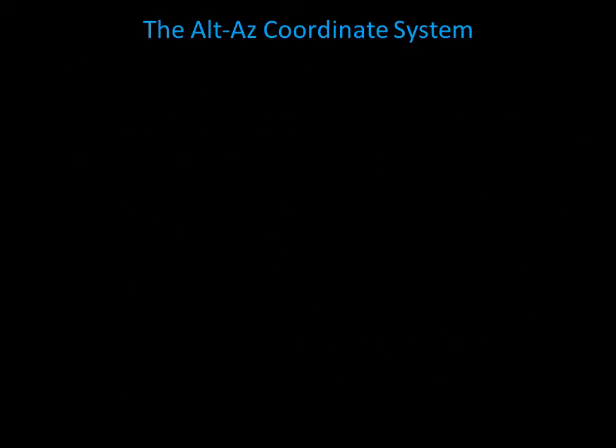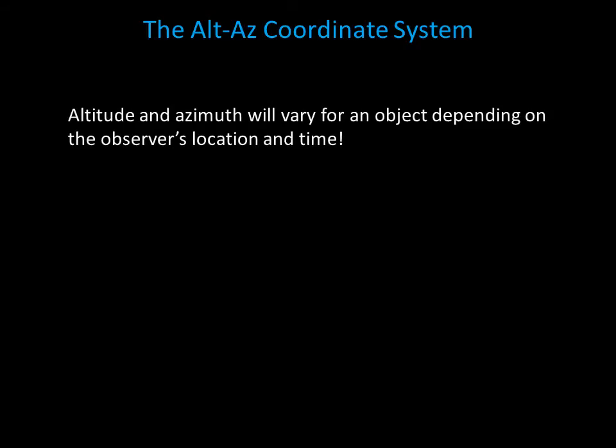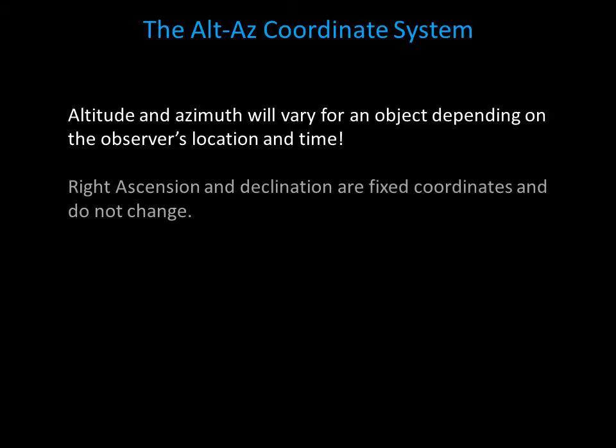Because Earth is rotating under the celestial sphere, the positions of the stars change. Therefore, the altitude and azimuth of a star at 12 a.m. will be different than at 2 a.m. This is unlike right ascension and declination, which are fixed coordinates and do not change.